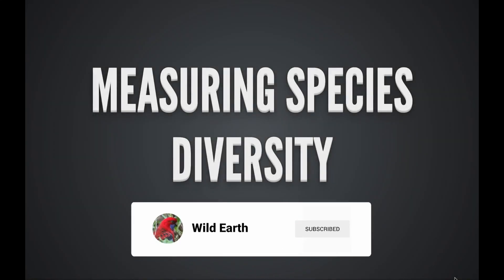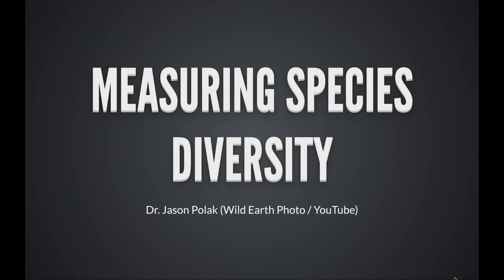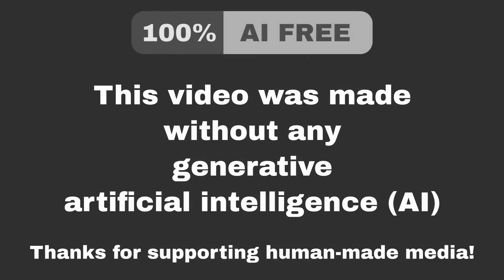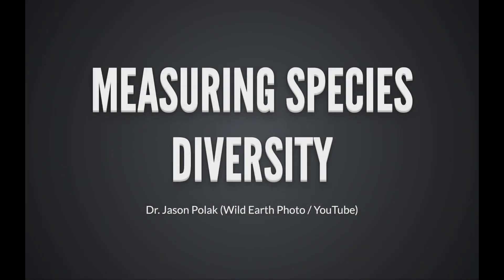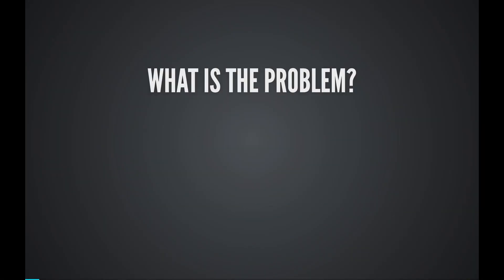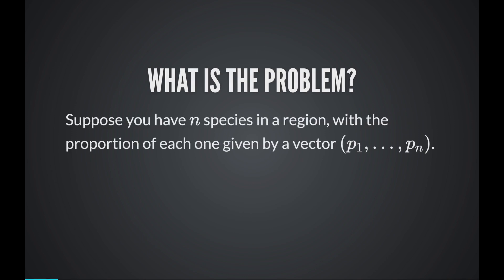Good afternoon. My name is Jason, and I'm going to talk to you about measuring species diversity. So what's the problem here? Let's suppose you have a region, and you've counted all the species in the region, and you've also measured the proportion in which each species occurs. You write this down as a probability vector, P1 to Pn. You have n species, and you know each of the proportions for each species.